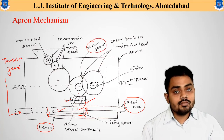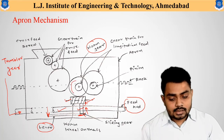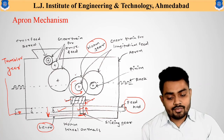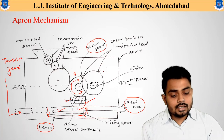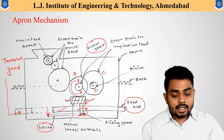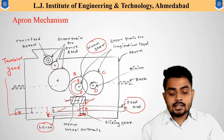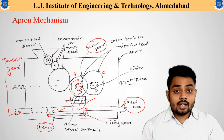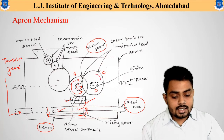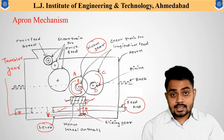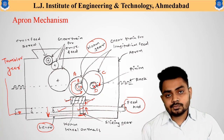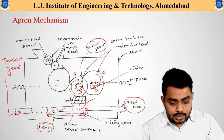The rotation of the sliding gear, being attached to the worm wheel, causes the worm wheel to rotate as well. Let us say the worm wheel — gear A — rotates in the anticlockwise direction. Gear A and gear B are on the same shaft, so gear B also rotates anticlockwise. Gear B connects to gear C, so gear C rotates clockwise. Gear C and gear D are on the same shaft, so gear D also rotates clockwise.